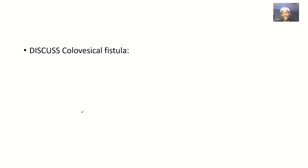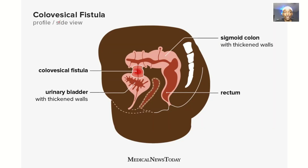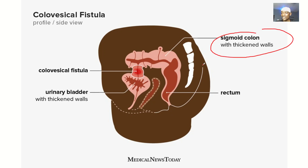There's another type of fistula known as a colovesical fistula. Colo refers to the sigmoid colon, and vesical refers to the bladder — another name for the bladder is vesical. So if there's an abnormal communication between the sigmoid colon and the bladder, that's what we call a colovesical fistula.